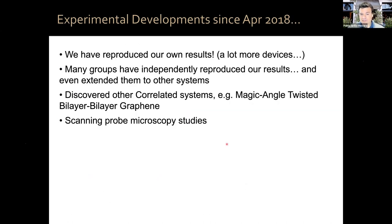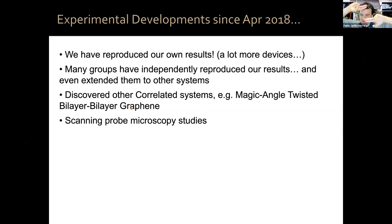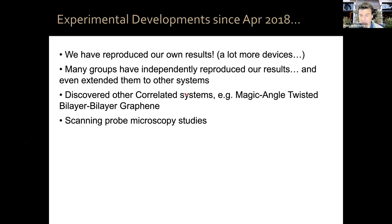We have discovered other correlated systems. For example, magic angle twisted bilayer bilayer graphene, where you have Bernal-stacked bilayer graphene twisted by the magic angle. That system is not clear if it's superconducting — it may be a fragile superconductor if at all — but it has interesting magnetic correlated insulating states. There are many other systems. By now we also have moiré systems without twist, like ABC trilayer and TMD heterostructures, which all exhibit interesting correlated physics.